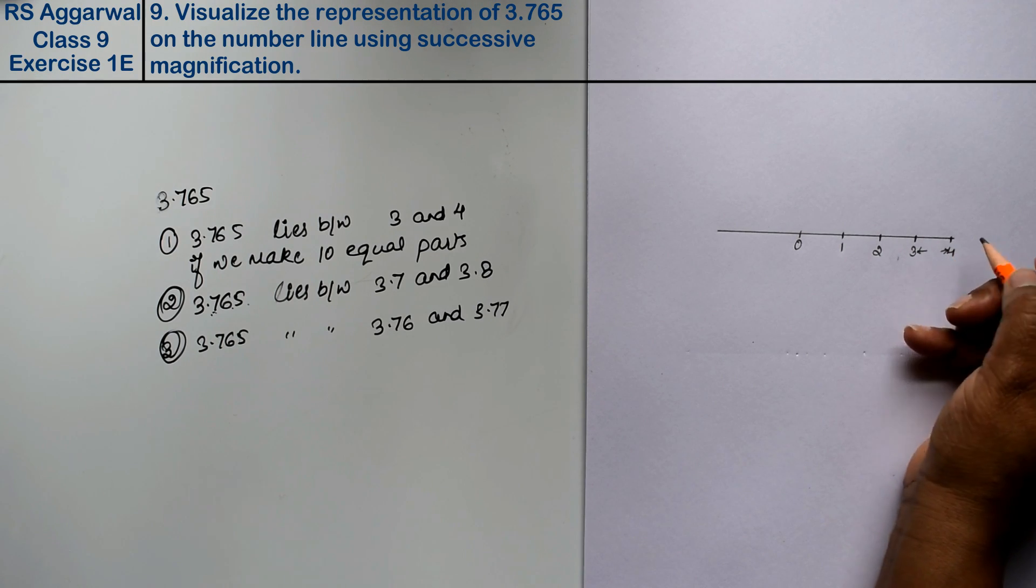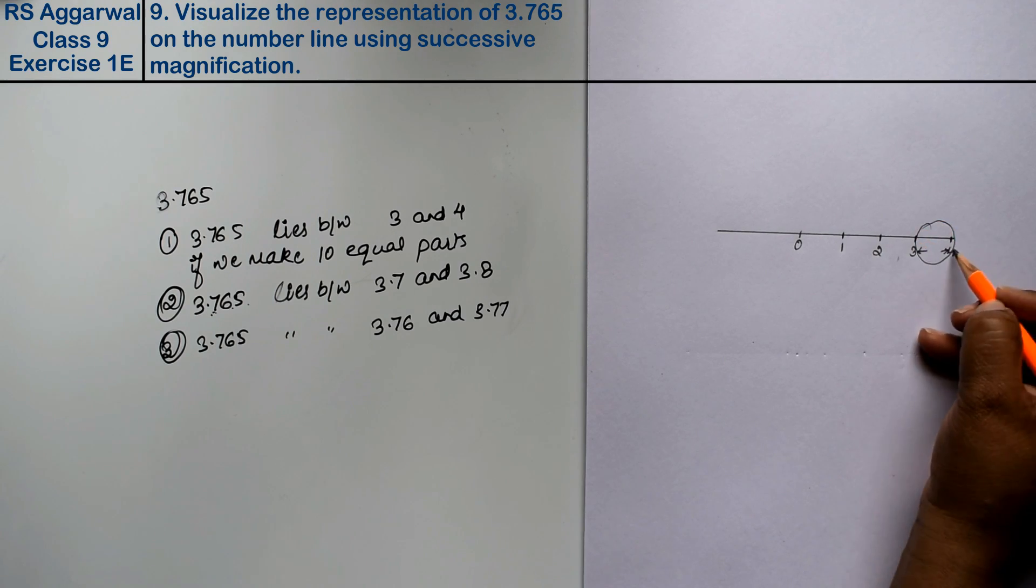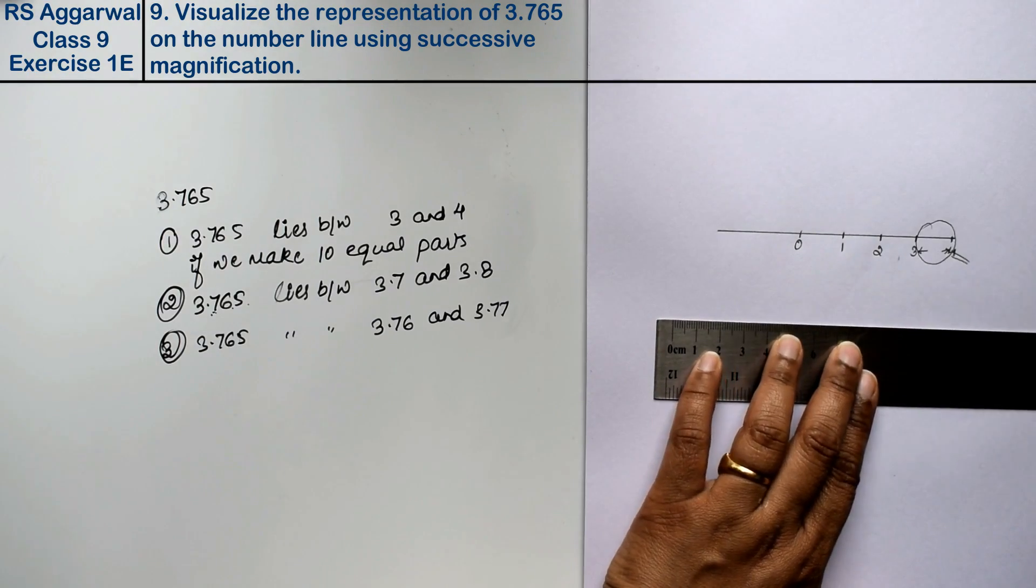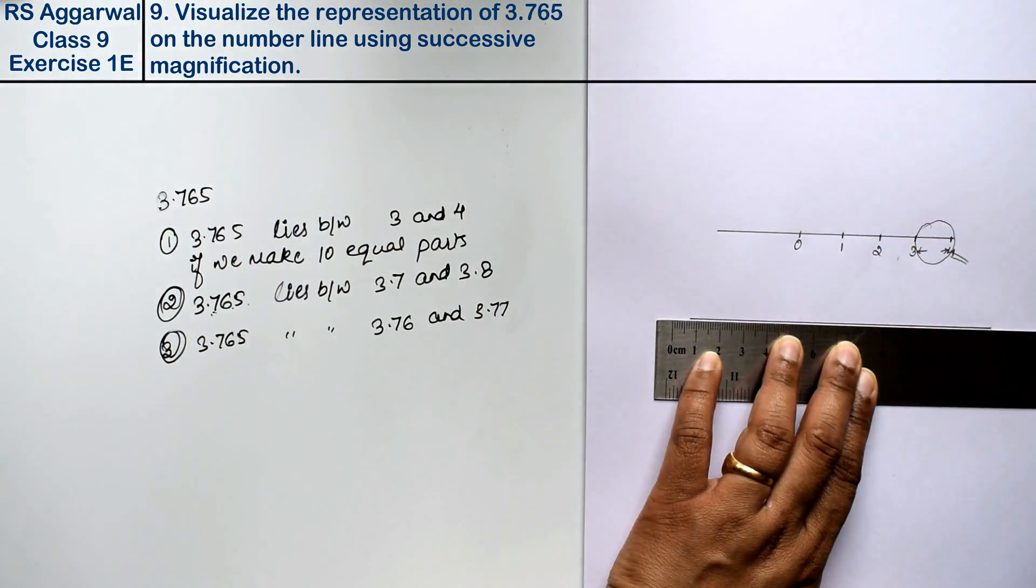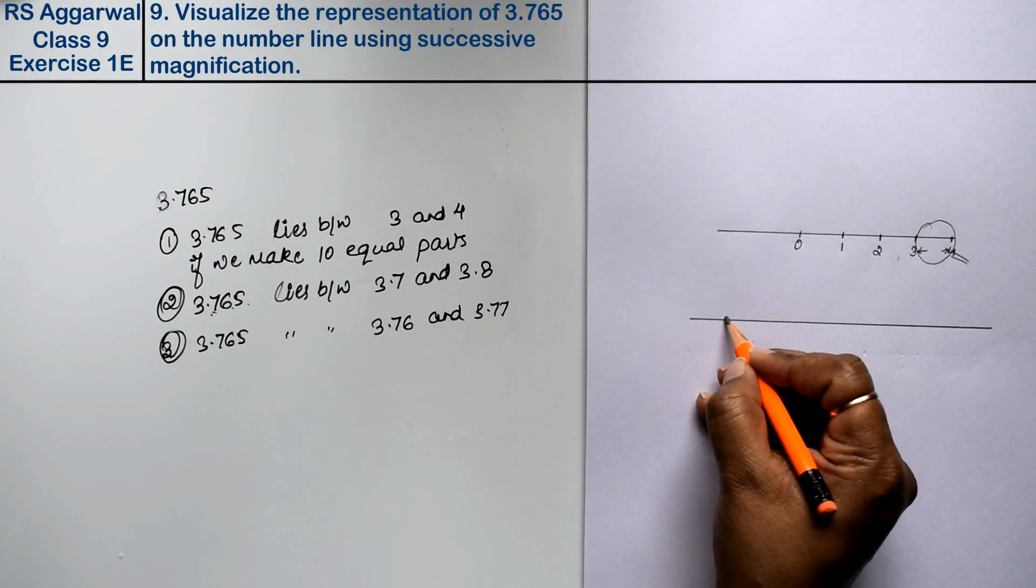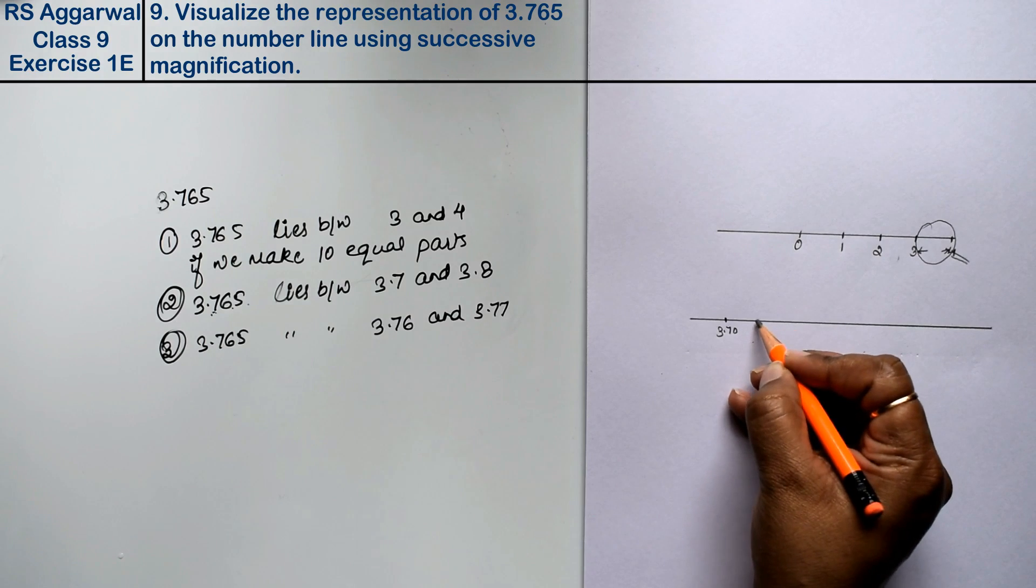Right friends, if we look at the magnifying glass, then we will lie between these numbers. Now, let's make another number line. We will see what we call the magnifying glass for 3.765. We will see that we have 10 parts.